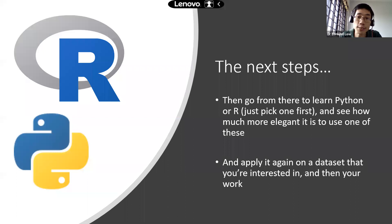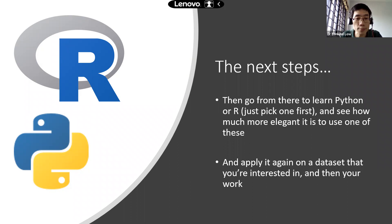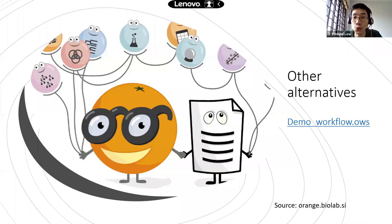From this introduction to data analytics, the next step is to pick up a programming language — Python or R. Pick up one first and see how much more elegant it is to use for data analytics, then apply it to the datasets and work you're interested in. If you're hesitant about learning a new programming language, there are now more user interface-based, widget-based software that allow you to build data analytics pipelines without needing to code.